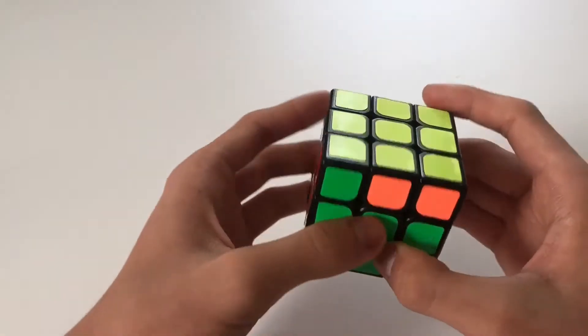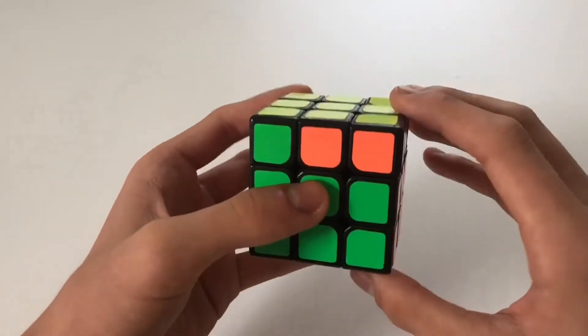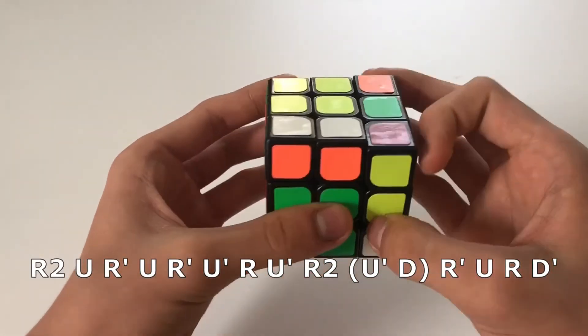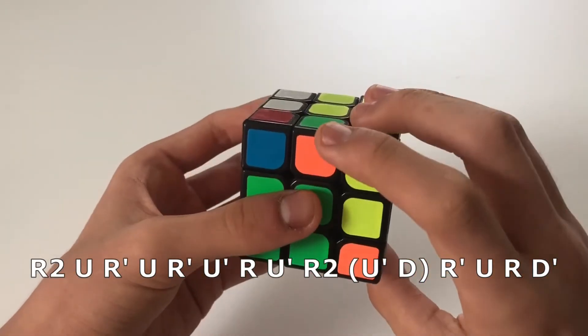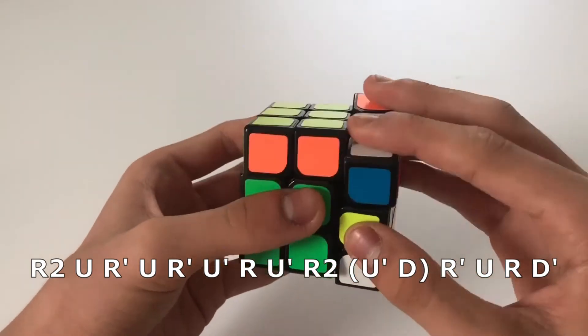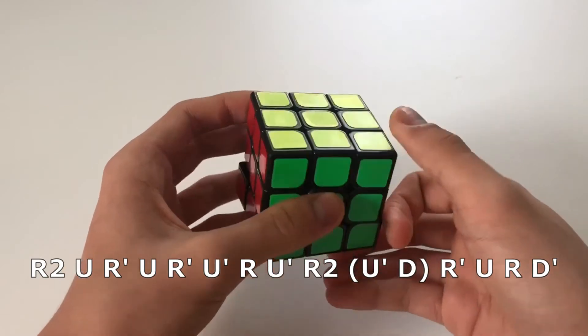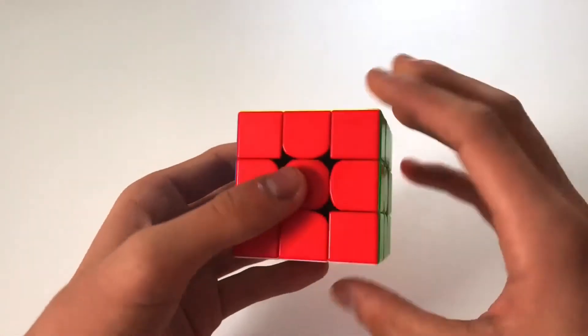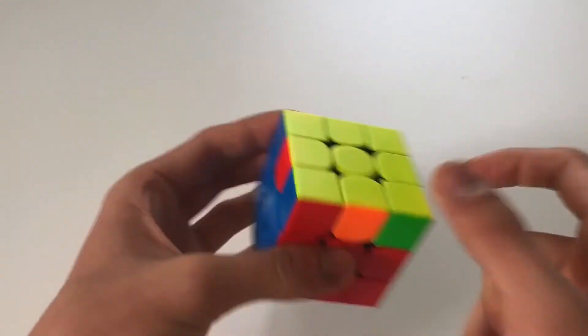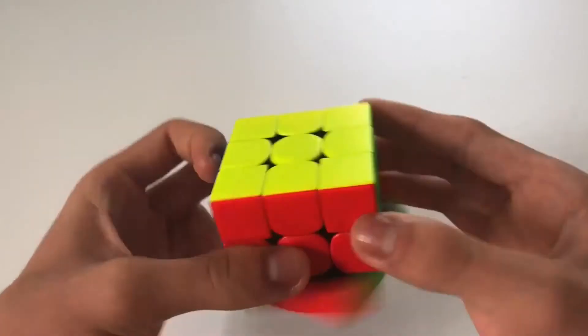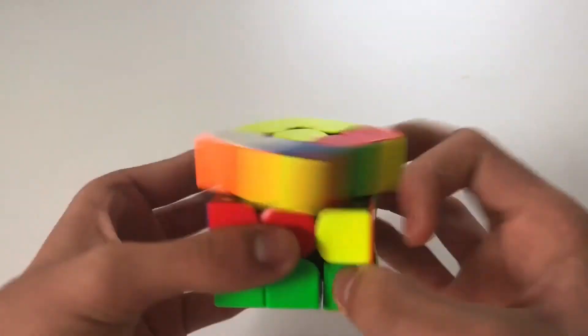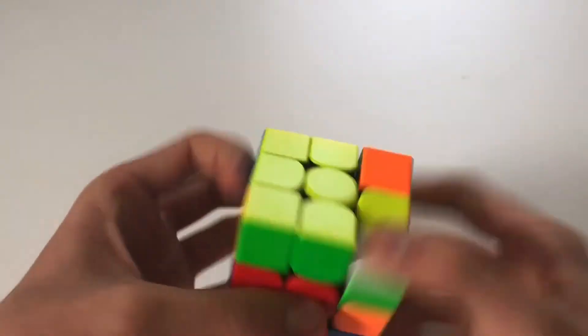And here is the reverse of the algorithm also done on the back. So now you know all the GPRMs. You know the standard, the reverse, the standard back, and the reverse back.